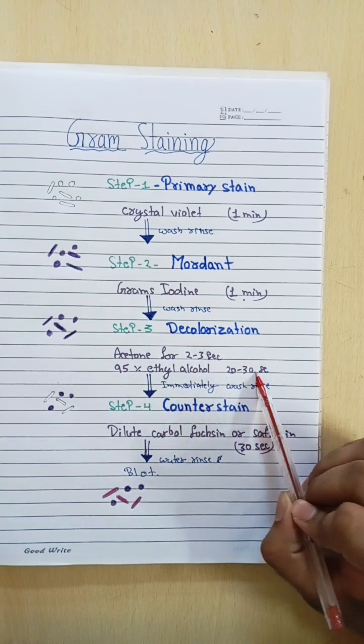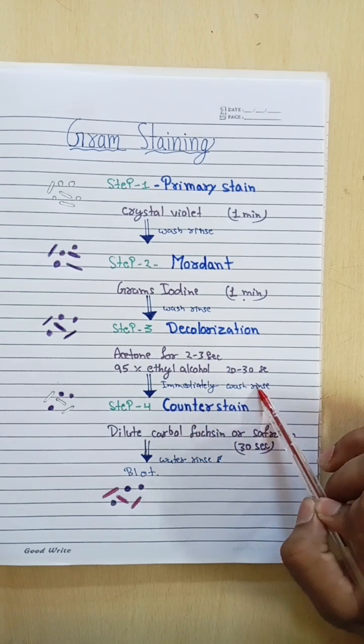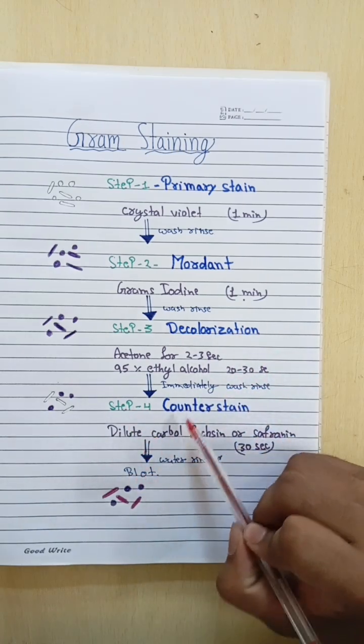Ninety-five percent ethyl alcohol we have to keep for twenty to thirty seconds. Immediately wash. This is the crucial step.